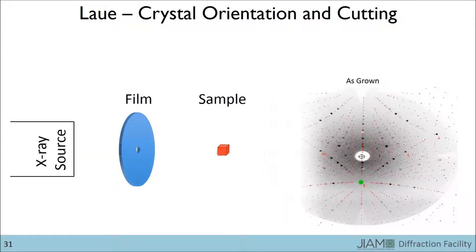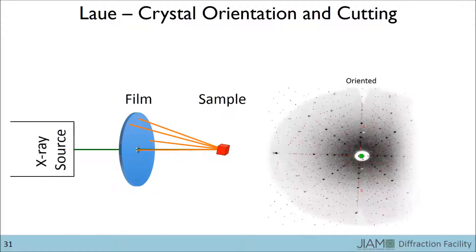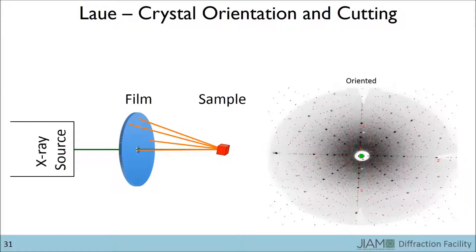Using our goniometers, I rotated the sample, ran another test, and found that the 1-0-0 plane was now in the center of the pattern, which means that it is perpendicular to the X-ray beam.